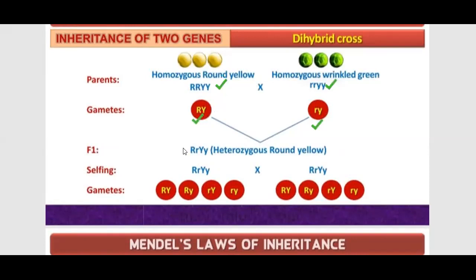In F1 generation, all organisms are round and yellow. All organisms are round and yellow, but all organisms will be heterozygous. This is the F1 generation — we have a round and yellow character. All offspring are round and yellow, but the gametes they produce are differing.